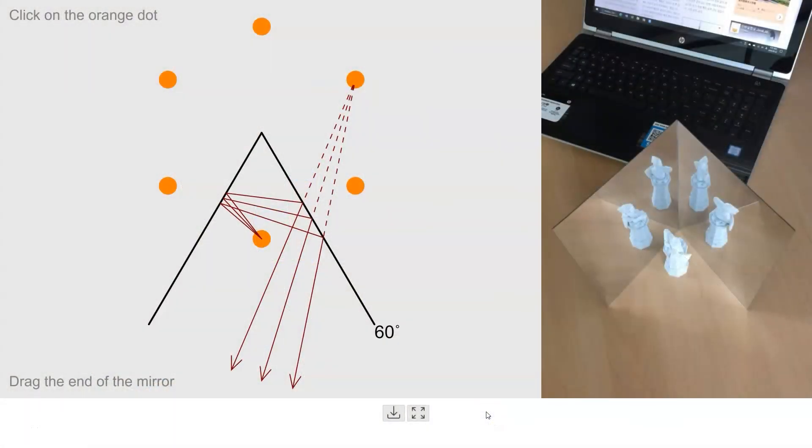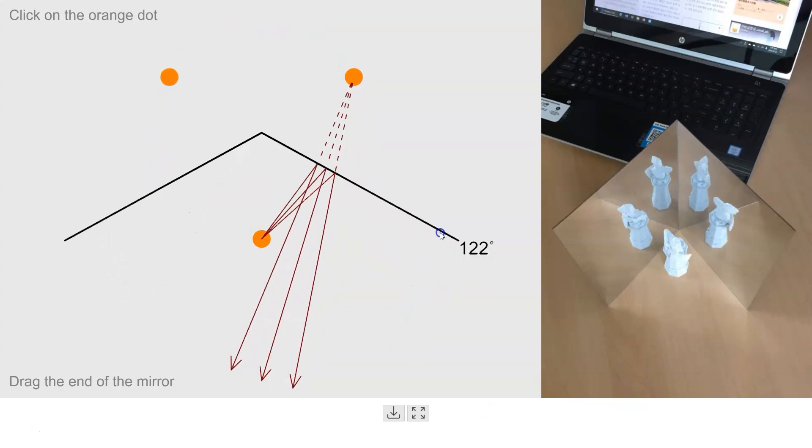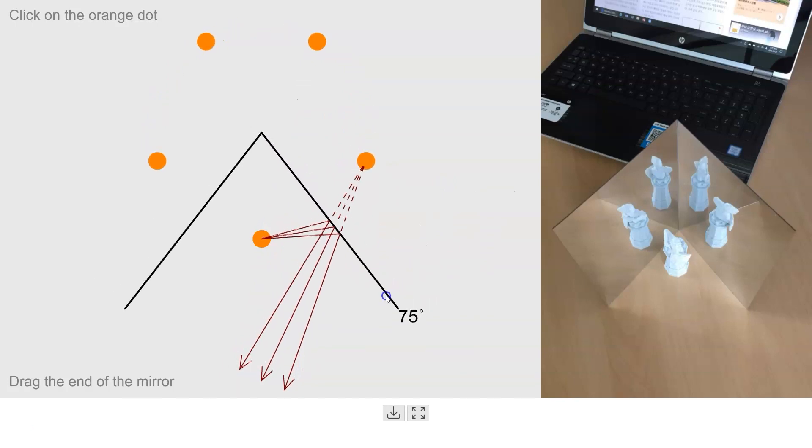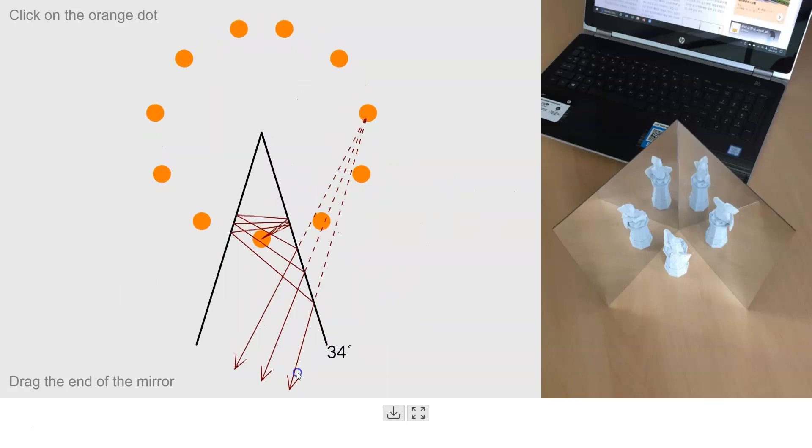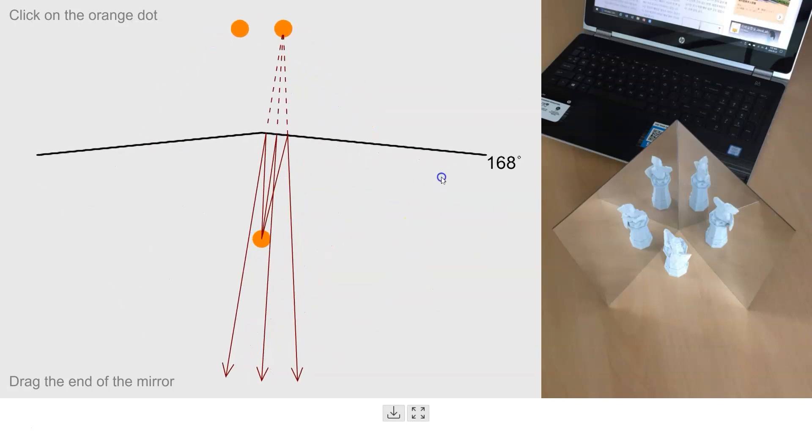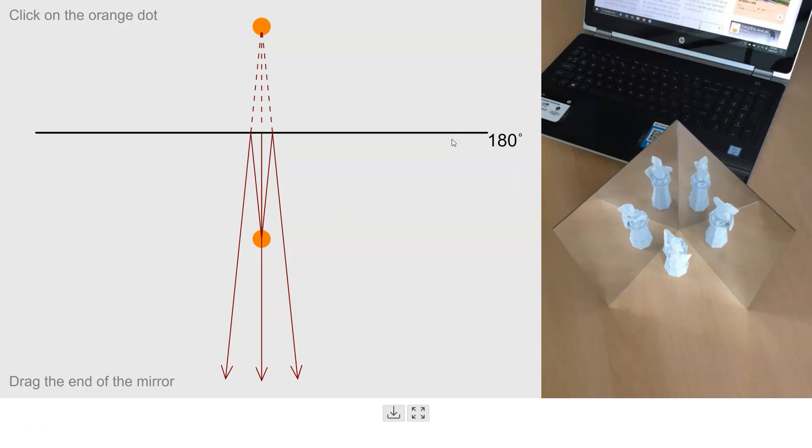If you're using the multiple reflection simulation on Java Lab, you just need to drag the mirror to each of the angles described in this Google Form and in your Google Sheets report. The images are the orange dots behind the mirrors.